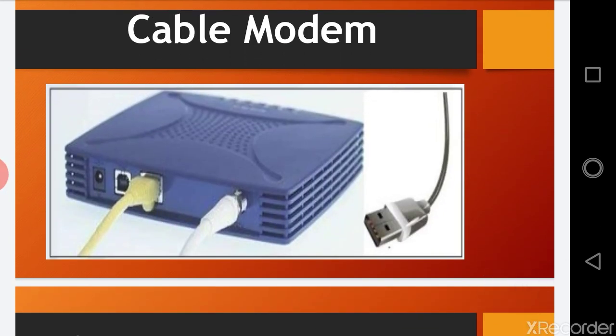The last type of modem is the cable modem. You can install a cable modem in your home. The wire used to connect the internet is a coaxial cable — the same cable used by television to watch different channels. One major advantage of the cable modem is that you can use both internet and television service through it. Also, cable modem has higher speed than DSL.